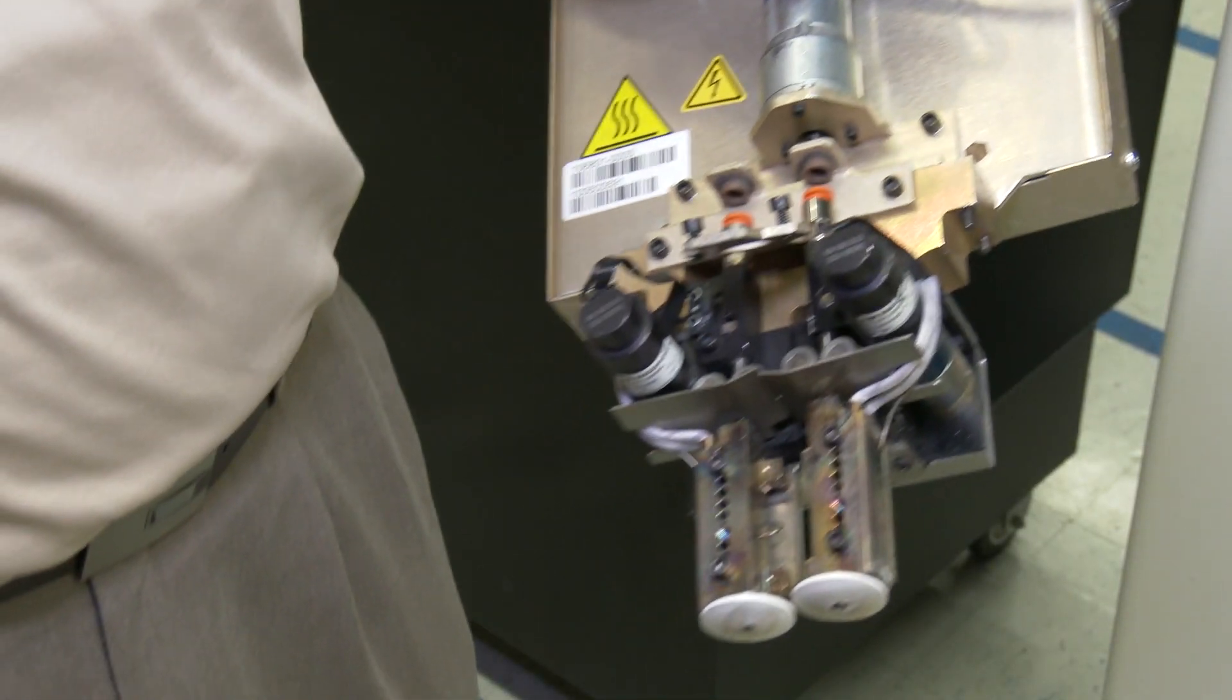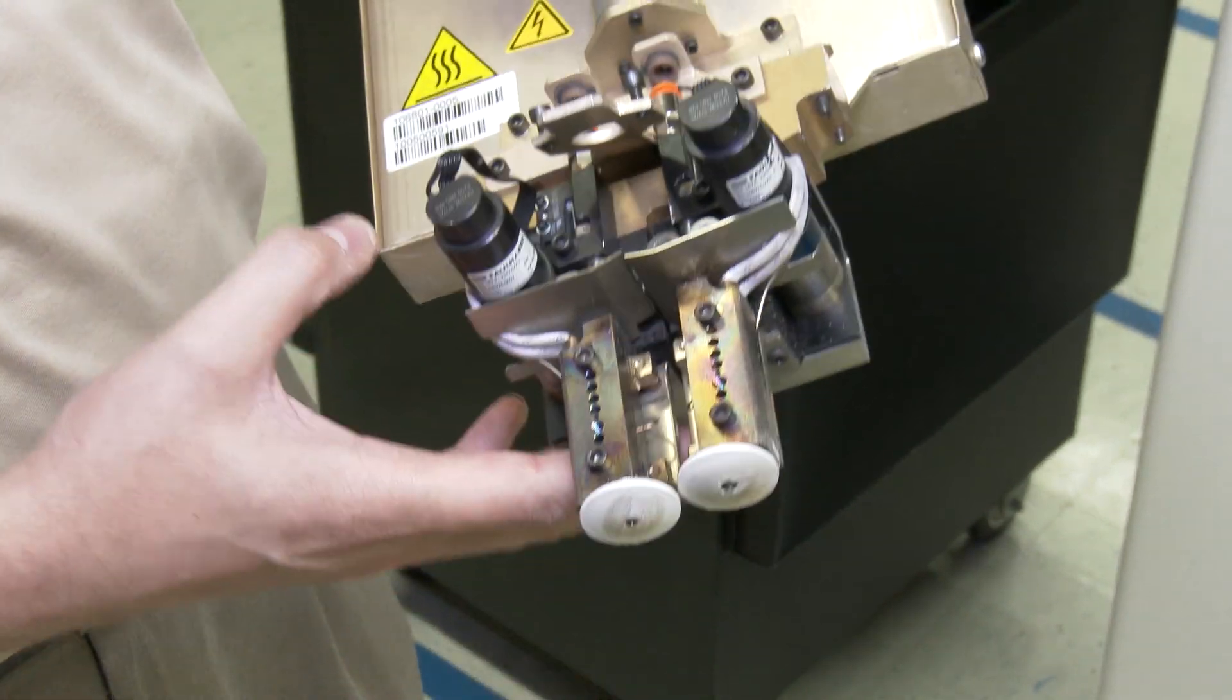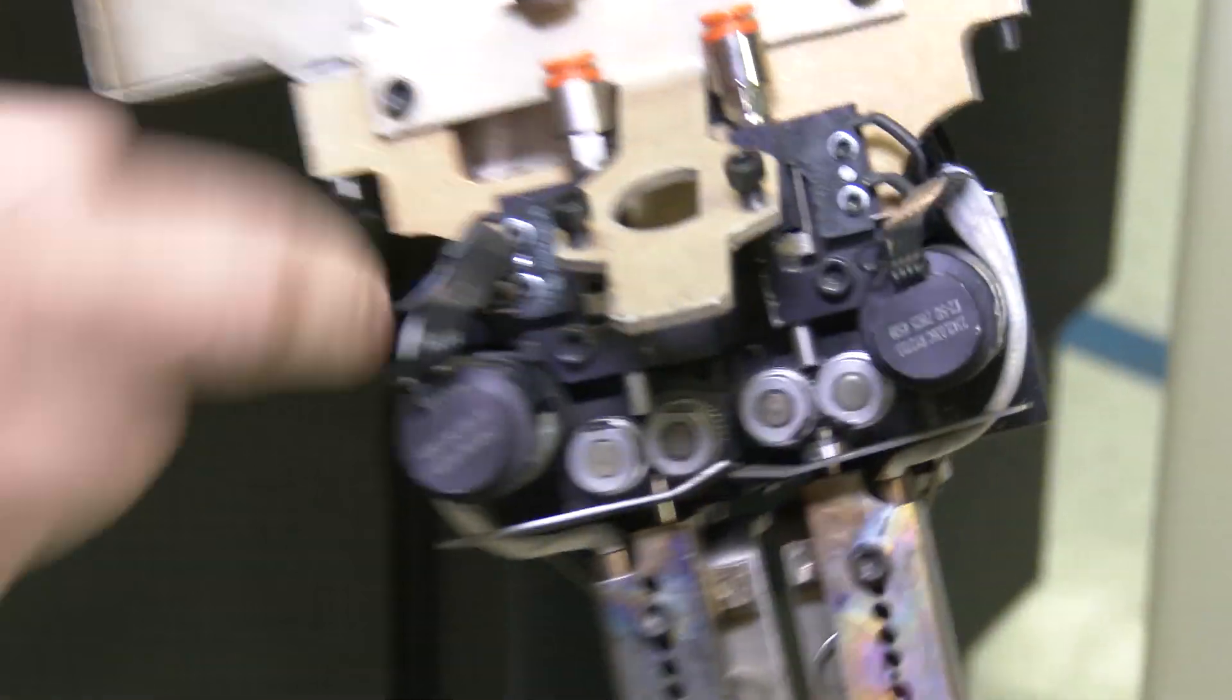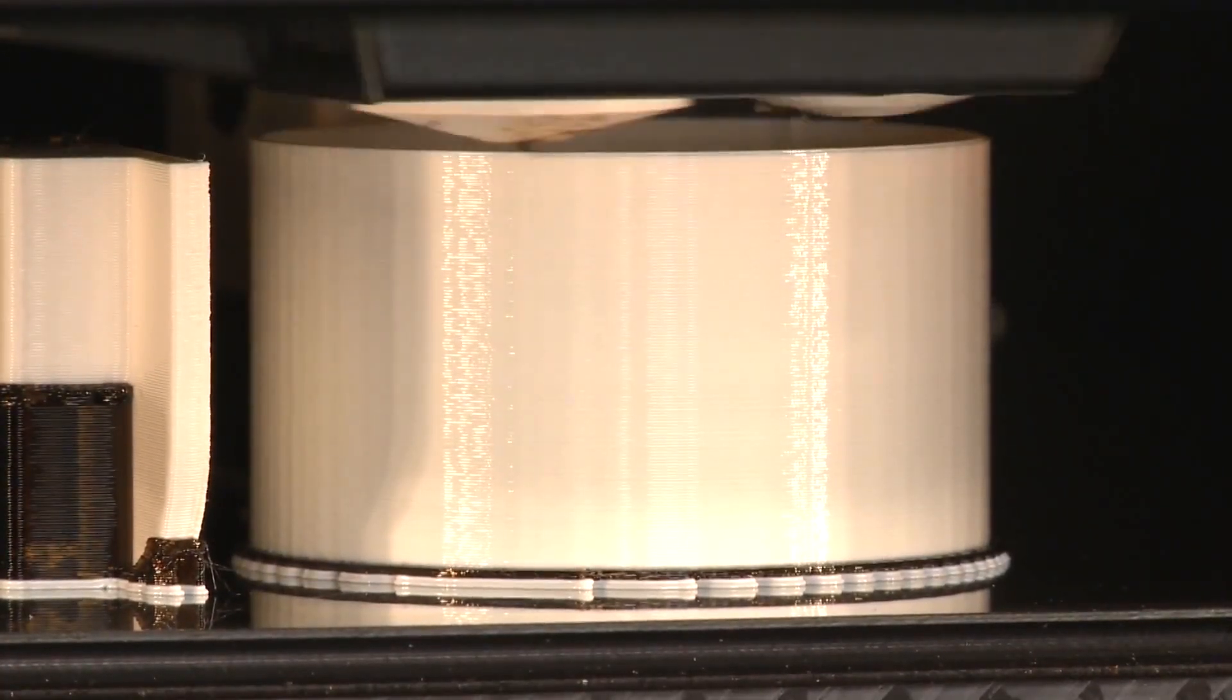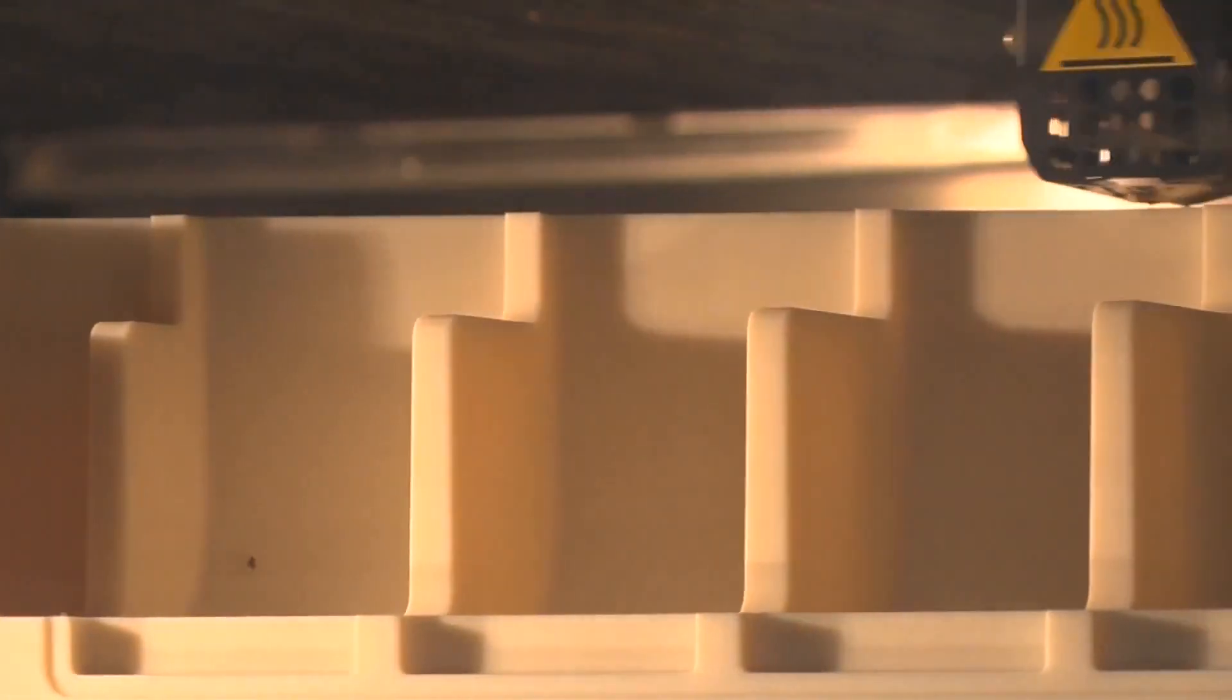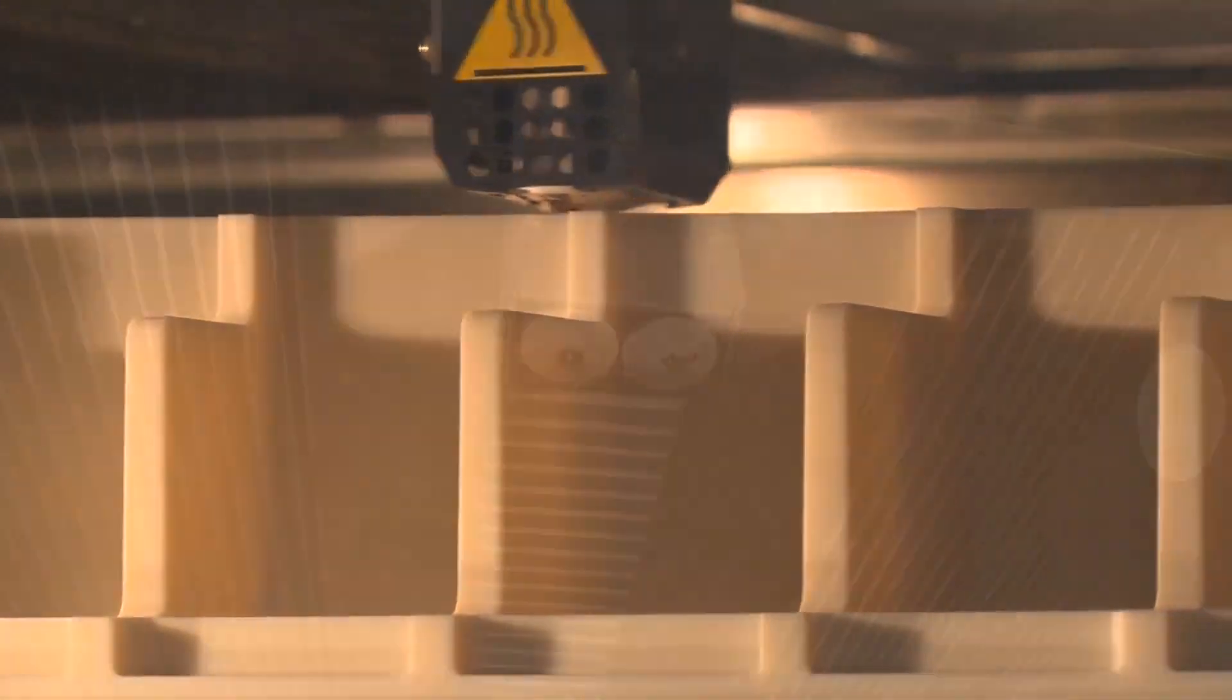So this is the head. The filament comes through here, it gets fed through here. These drive wheels in here spin to push them through these heater blocks and these are the tips right here. Teflon coated and it gets extruded through here in very small layers as low as five thousandths of an inch in Z.